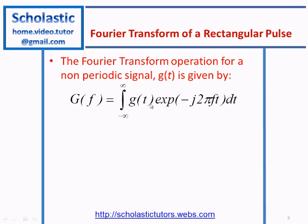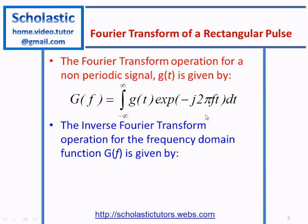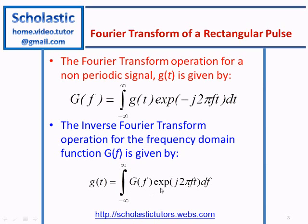Normal time domain signals we write as g(t), and when you transform to frequency domain we get capital G(f) using the Fourier transform operation. We can also do the inverse Fourier transform for the frequency domain function G(f), which is G(f) multiplied by exponential positive j 2π ft, integrated from minus infinity to plus infinity. Note that the exponent is positive here — previously it was negative — and capital G(f) will become g(t), going from frequency domain back to time domain.